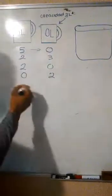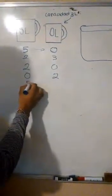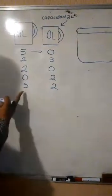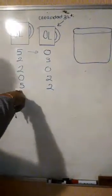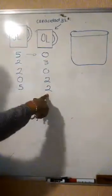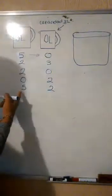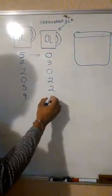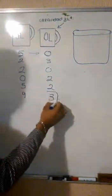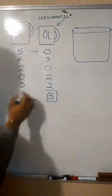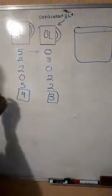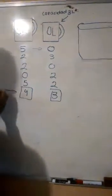Esta jarra se volvería a llenar, teniendo 5 litros y 2 litros. Como se puede ver, aquí le falta un litro para que esté llena, entonces esta se lo puede pasar, quedando 4 litros y aquí 3. Entonces esta queda llena y el 4 es lo que le pide, es decir, los 4 litros exactos de vino.